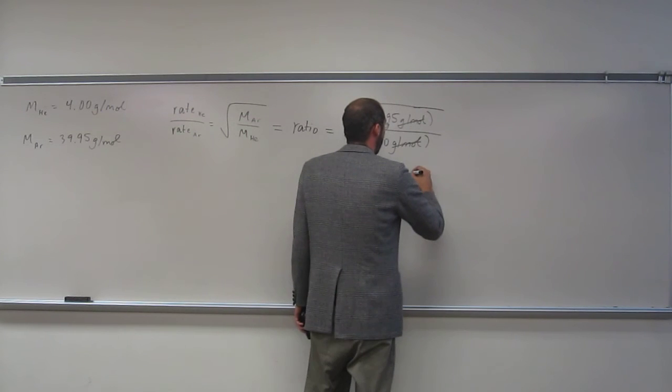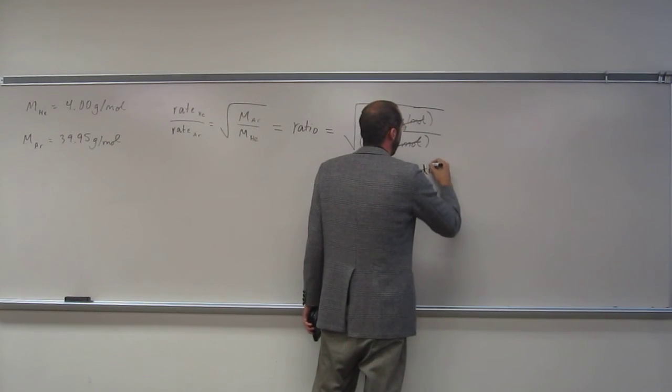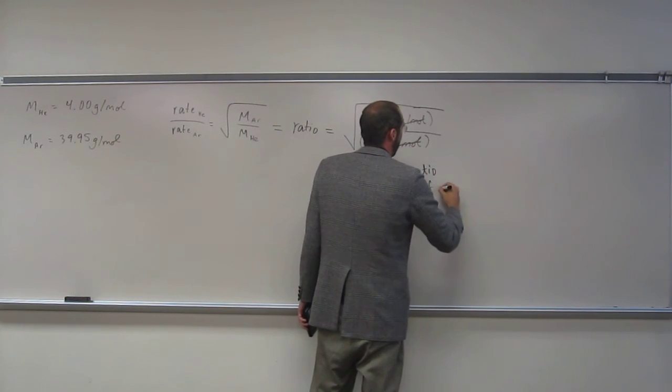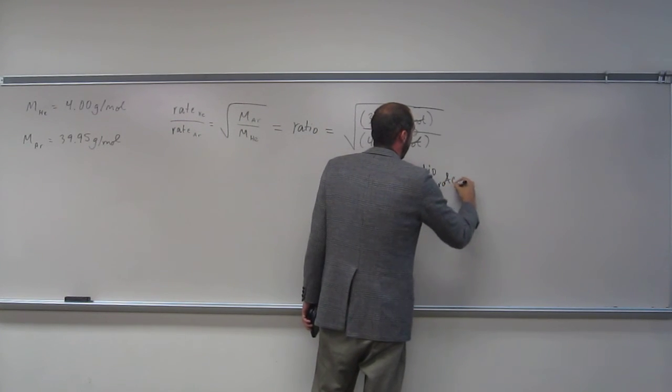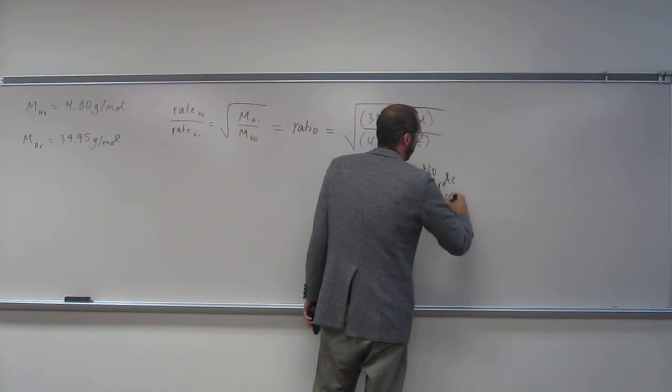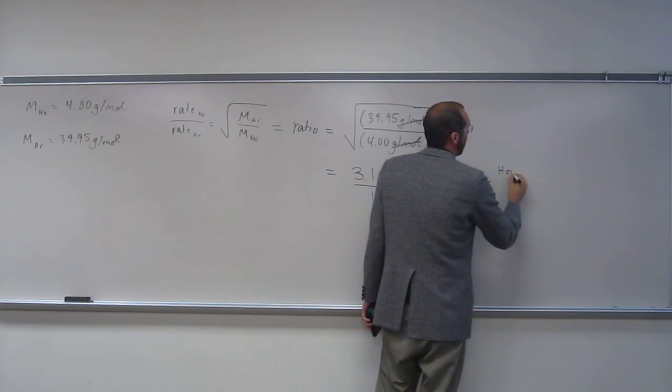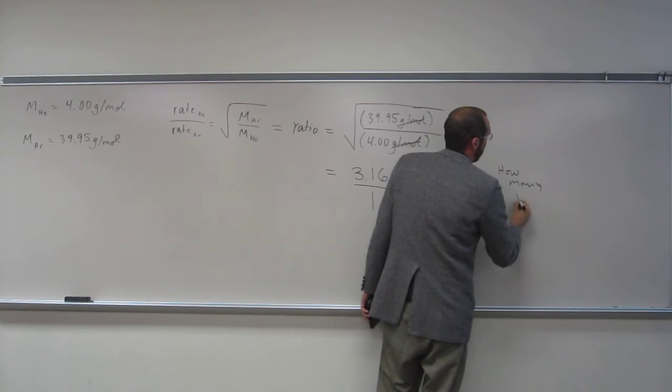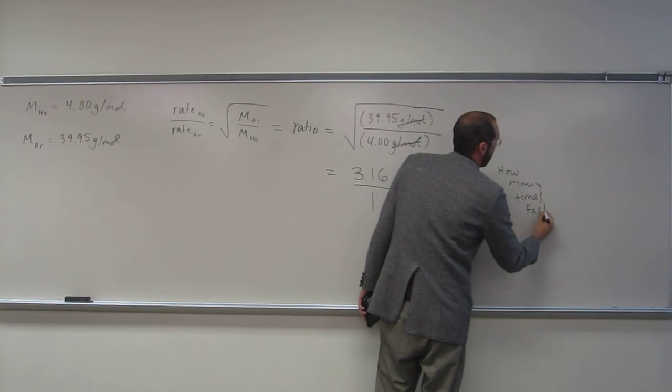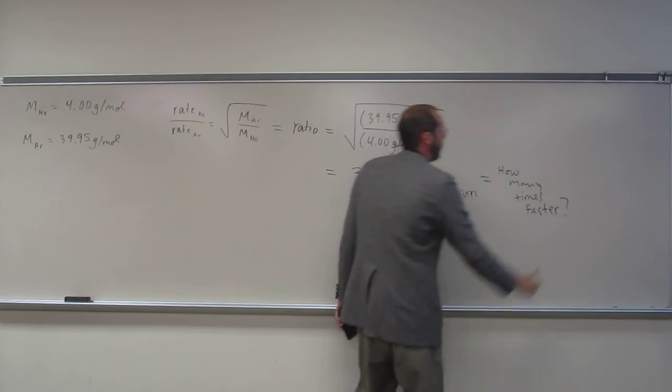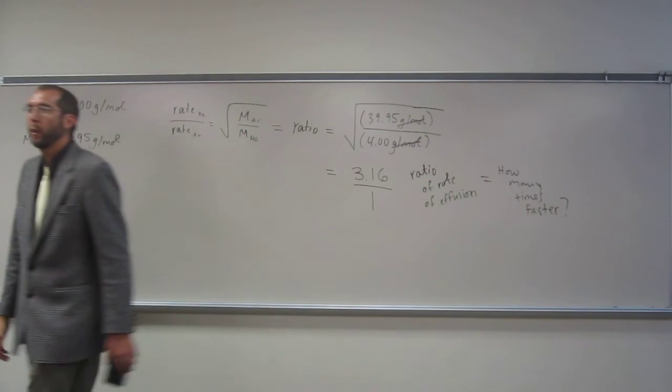So this is the ratio of the rate of effusion. And that gives us, like what this says, how many times faster. Does that make sense to everybody? Any questions on it?